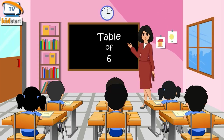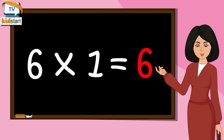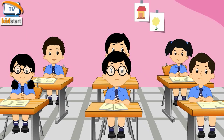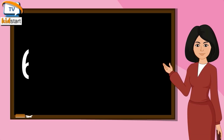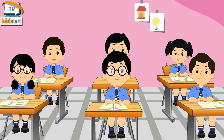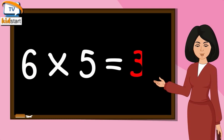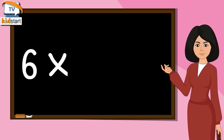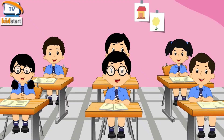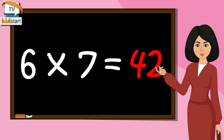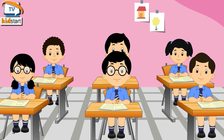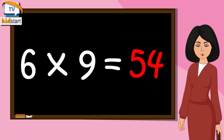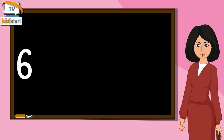We love 6. 6-1s are 6. 6-2s are 12. 6-3s are 18. 6-4s are 24. 6-5s are 30. 6-6s are 36. 6-7s are 42. Six eights are forty-eight. Six nines are fifty-four. Six tens are sixty.